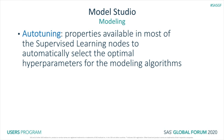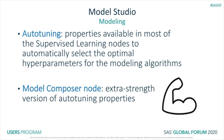To find them in an automated manner, auto-tuning searches the hyperparameter space to determine the values that optimize the selected objective function — typically a measure of model error like misclassification rate — using search methods such as Bayesian Kriging, genetic algorithm, grid search, Latin hypercube sampling, or random search. This model is then trained with these hyperparameter values. The Model Composer node takes this to another level, an extra strength version of single model auto-tuning.